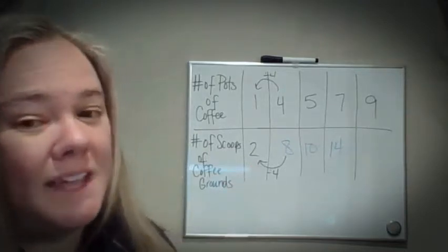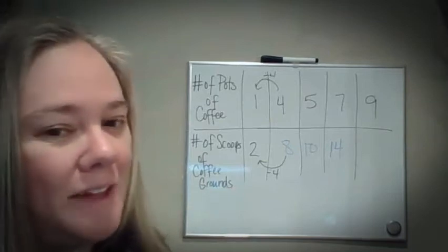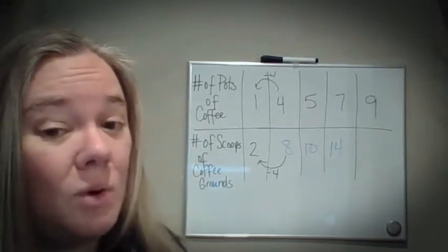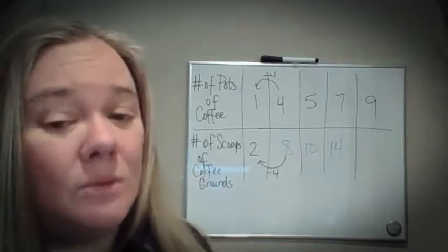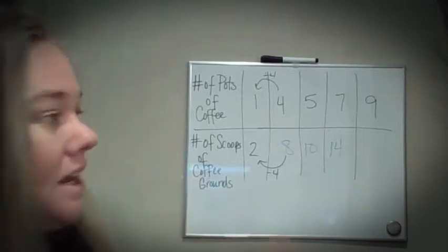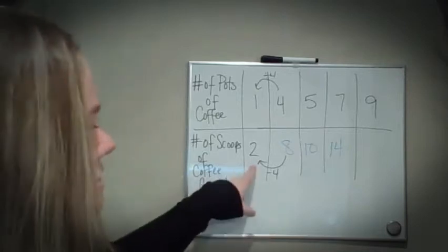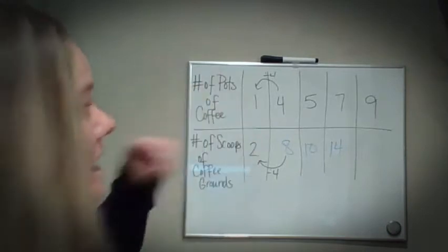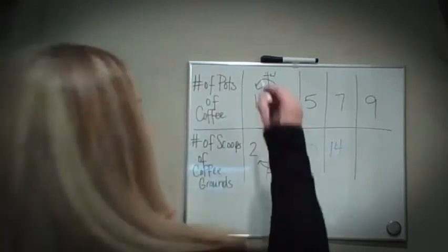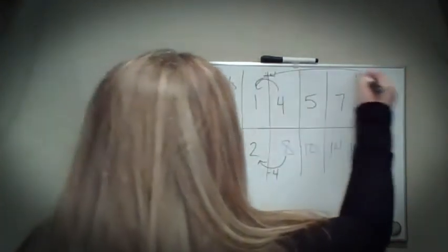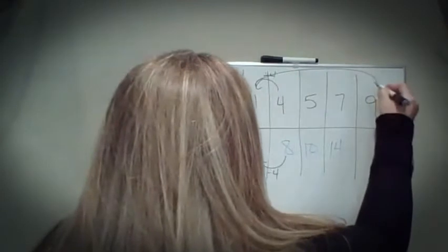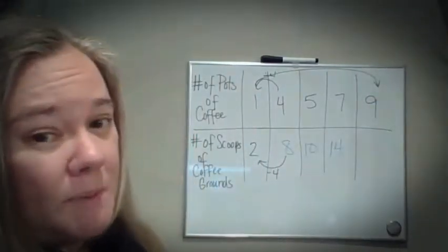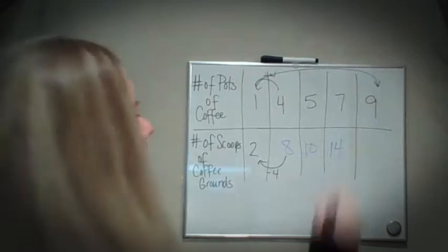So for every pot of coffee, I need to use two scoops of coffee grounds. Here's the catch — once I find that unit rate, like I said, you can find for anything. Now that I know it's two scoops for every pot, I can go from one pot all the way to nine pots by using a multiplication of nine.